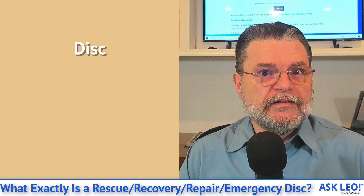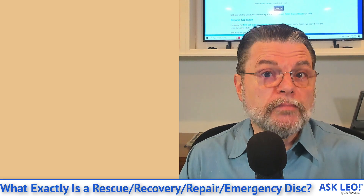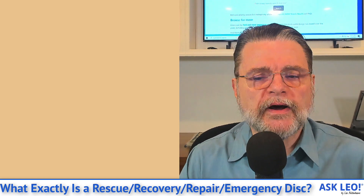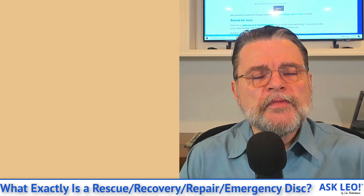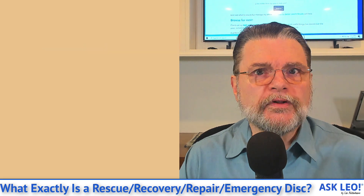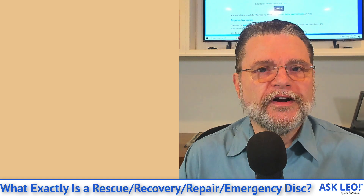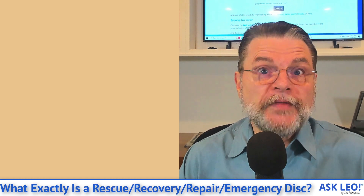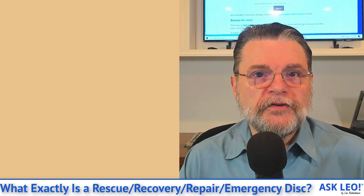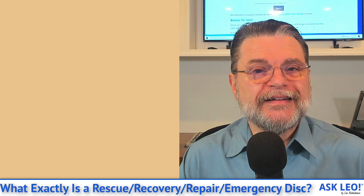One thing I want to clear up right away: disc with a C generally means an optical disk like a CD, DVD, or Blu-ray. Disk with a K refers to a physical magnetic disk. You'll often hear the term disk — with either a C or a K — applied to USB thumb drives because they're treated kind of like hard disks by the operating system. Drive is another term you'll hear used inconsistently. For the purposes of this discussion, they're all equivalent — I'll use them interchangeably because the industry seems to.